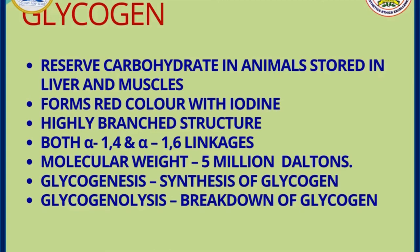Just as plants store glucose as starch, we store glucose in the form of glycogen, which is stored in the liver and muscles. Glycogen is a highly branched structure formed of both alpha-1,4 and 1,6 linkages. It is a high molecular weight polysaccharide and forms a red color with iodine. The synthesis of glycogen is known as glycogenesis, and the breakdown of glycogen is known as glycogenolysis.